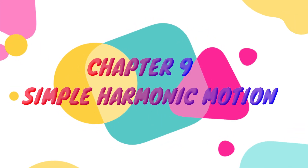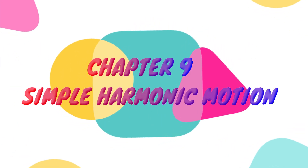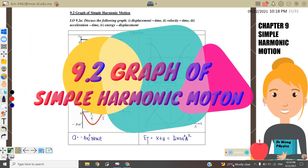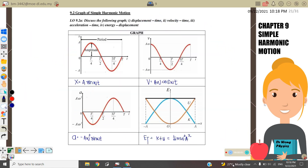Welcome to my channel. Today we are going to learn Chapter 9: Simple Harmonic Motion. In this video we are going to discuss 9.2 Graph of Simple Harmonic Motion. Graph number one is x versus time, which is a sine graph. We know that when x is maximum, the value is equal to the amplitude A.